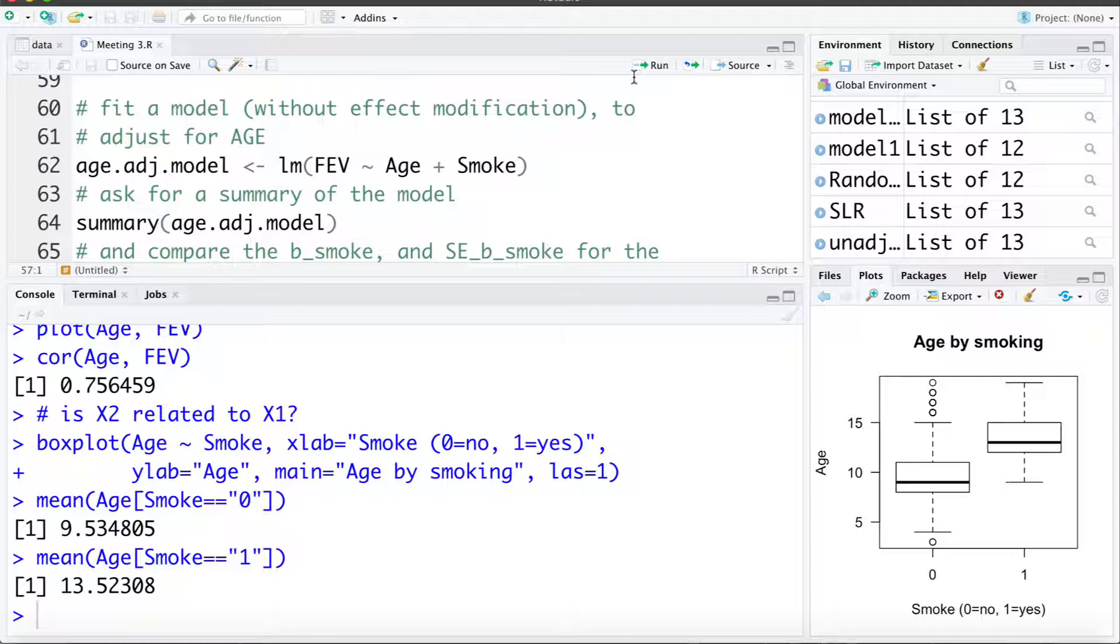We've already fit the unadjusted model, so let's try fitting a model that statistically adjusts for age. Here I'm going to fit a model that uses both age and smoking to estimate FEV. So here we're going to get the effect of smoking on FEV adjusted for age. I'm going to save this in something called the age adjusted model. So let's fit that model.